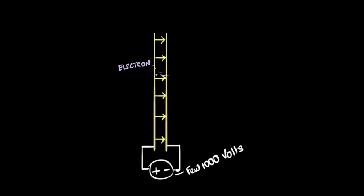If you want to make electrons go super fast, say close to 5 to 10% the speed of light, then all you need is a few thousand volts applied between two metal sheets kept close to each other.